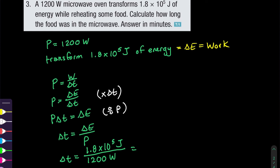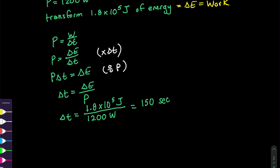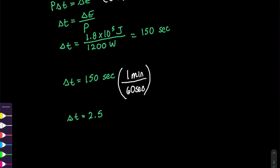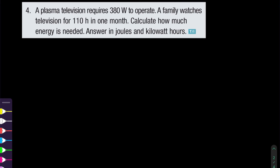We do a quick unit check: we have joules and watts, both SI units, so we can plug straight in and we get 150 seconds. But the question wanted the answer in minutes, so we convert: multiply by 1 minute over 60 seconds, cancel the seconds, and we get approximately 2.5 minutes.